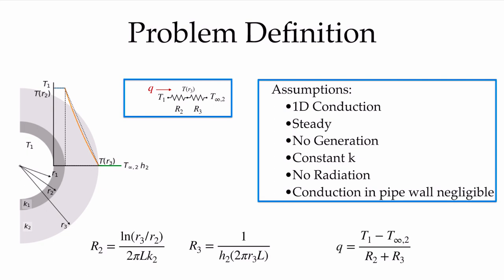Our conduction resistance — this is a cylindrical system where the radius is increasing through the insulation — is the natural log of the outer radius over the inner radius, divided by 2πL times the conductivity of the insulation material. Our convection resistance is 1 over hA, where the area is based on the outer radius R3. Our total heat loss from the system is the temperature difference between the pipe and the ambient over the sum of these two resistances.